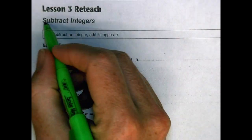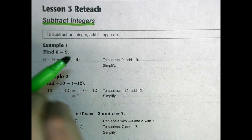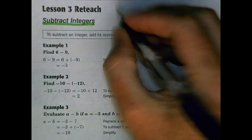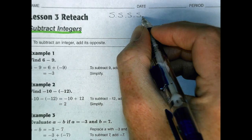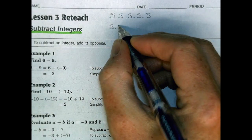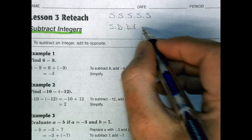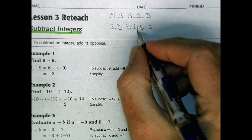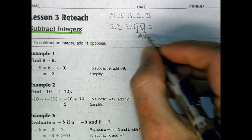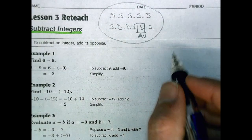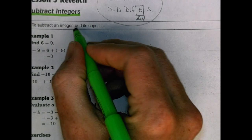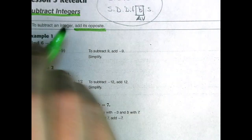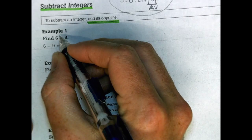Hi there. For our next lesson we're going to be talking about subtracting integers. Last time we were doing adding integers — if the sign was the same we found the sum and kept the sign, but if the sign was different we found the difference and kept the bigger sign. This still applies today, but first we have to work with subtracting integers. When we subtract an integer we're going to add its opposite, converting the subtraction problem into adding a negative number.